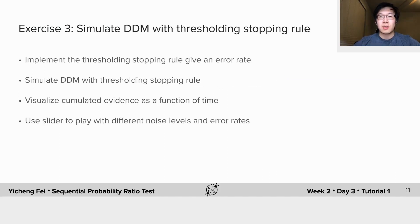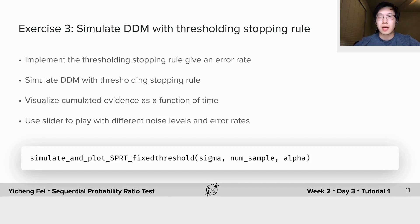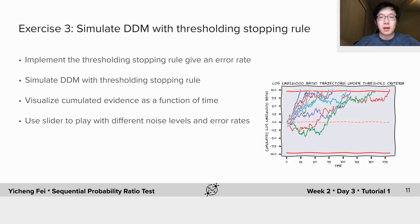Now it's your turn. In exercise 3, you will simulate drift diffusion models with thresholding stopping rule. You need to implement the threshold stopping rule given a desired error rate. After that, please run some simulations and use our provided code to visualize the accumulated evidence as a function of time. Here is a sample plot for reference.